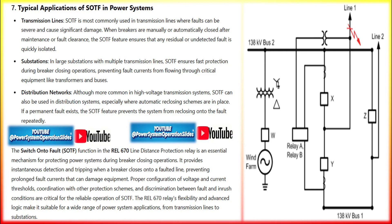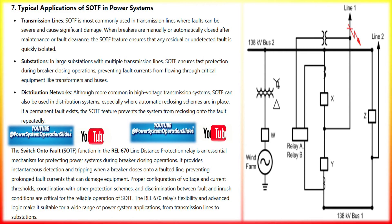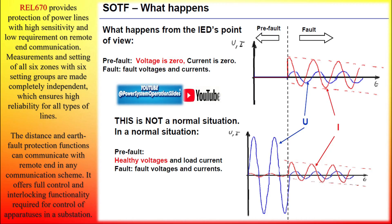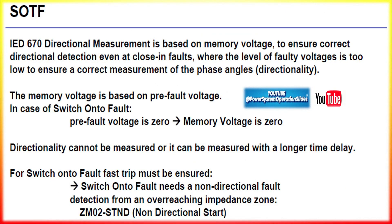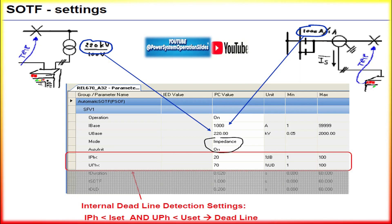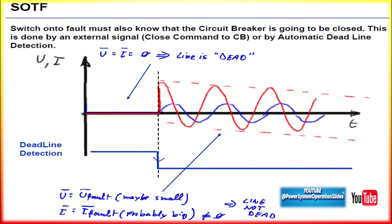The typical sequence for SOTF operation in the REL670 is as follows. First, monitoring the line voltage: the relay continuously monitors the line voltage. Before the breaker is closed, the voltage is near zero if the line is de-energized; if there is a fault, this voltage remains very low. Second, breaker closure detection: the relay detects when the circuit breaker is about to be closed using breaker status contacts or auxiliary contacts, and prepares for potential fault detection. Third, fault current detection: once the breaker closes, the relay looks for a sudden spike in current. If the current exceeds a preset threshold — much higher than normal load current — it assumes the breaker has closed onto a fault. Finally, instantaneous tripping: the SOTF function bypasses normal protection settings like time delays or zone coordination and sends an immediate trip signal to isolate the faulted line.